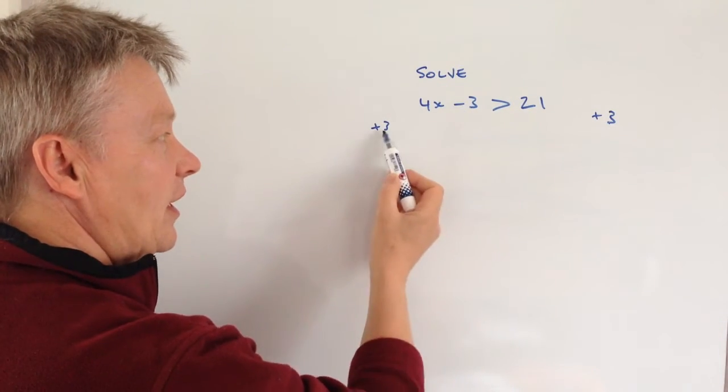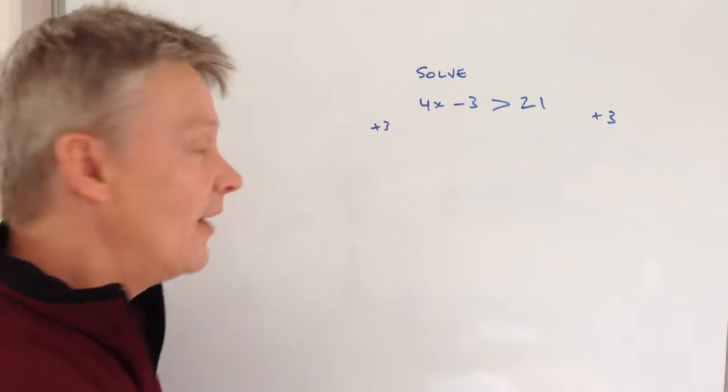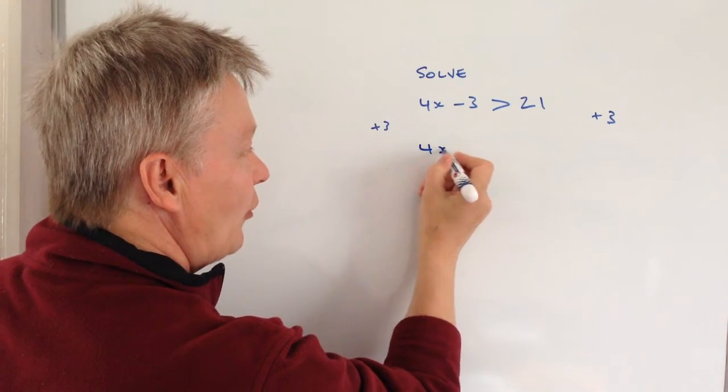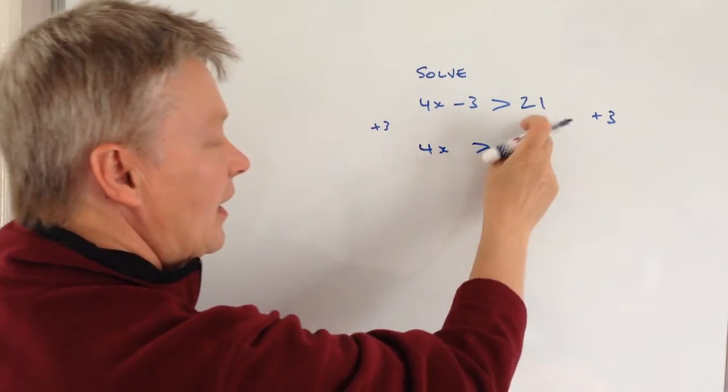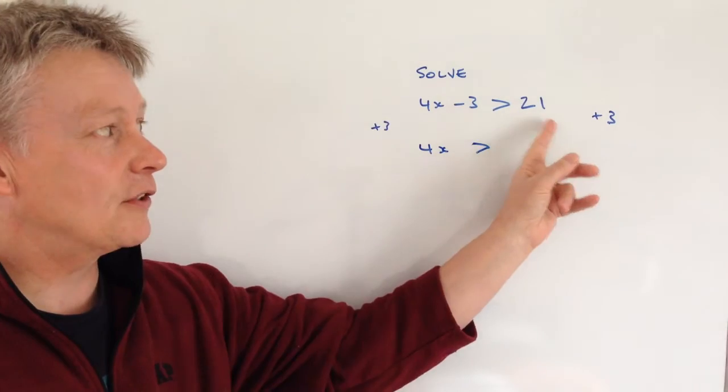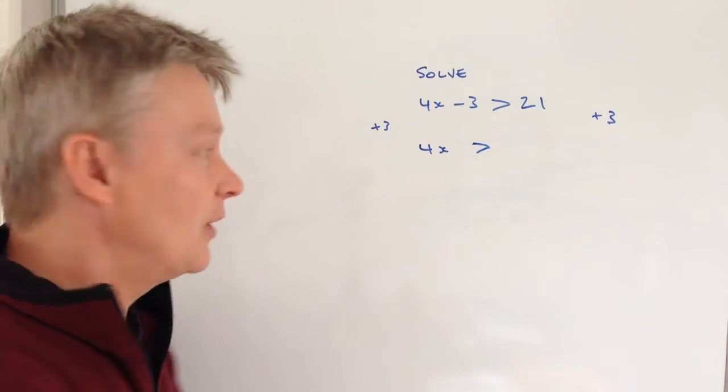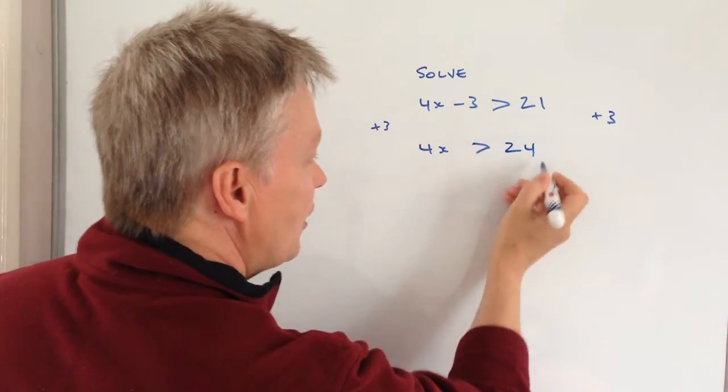So this minus 3 and this plus 3 cancel out and I end up with just 4x is greater than, and on the right hand side here I've got 21 plus 3. Well, that's going to be 24.